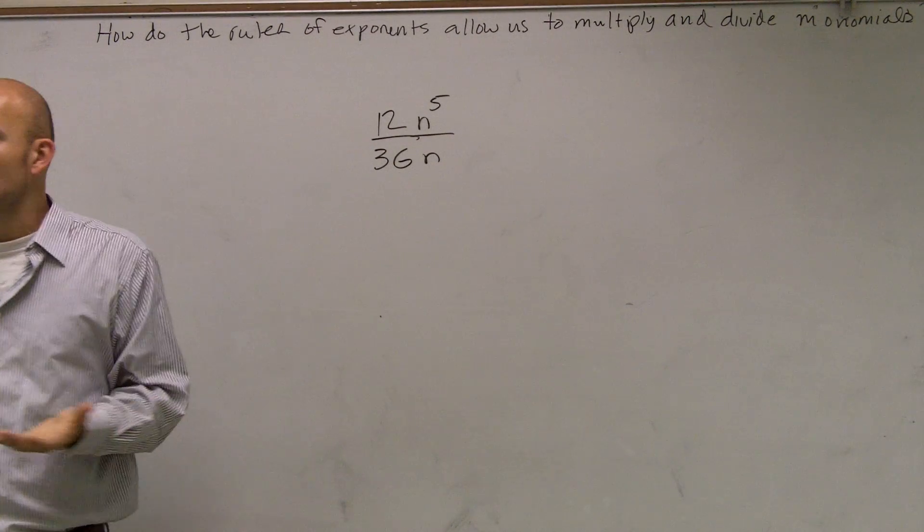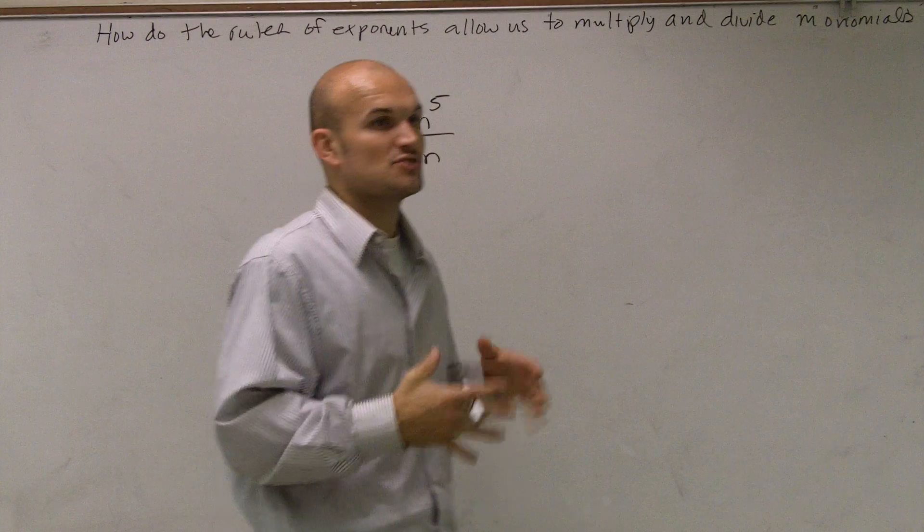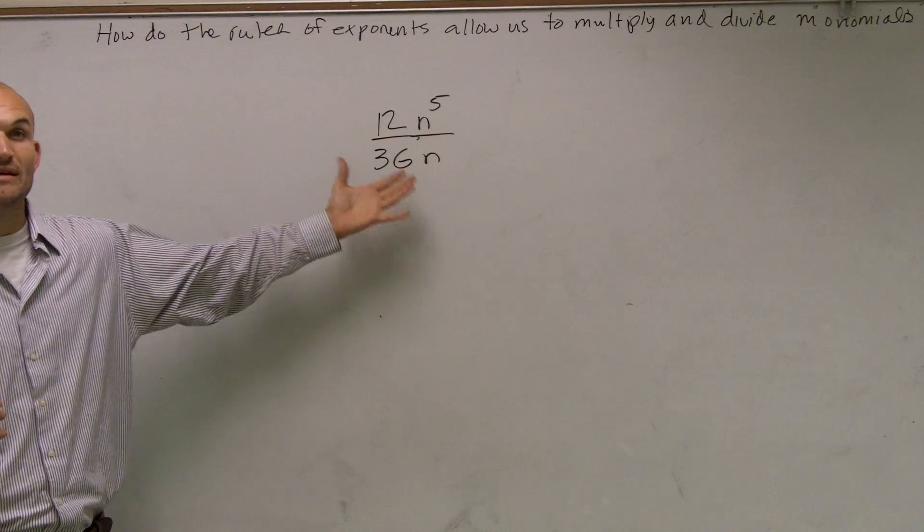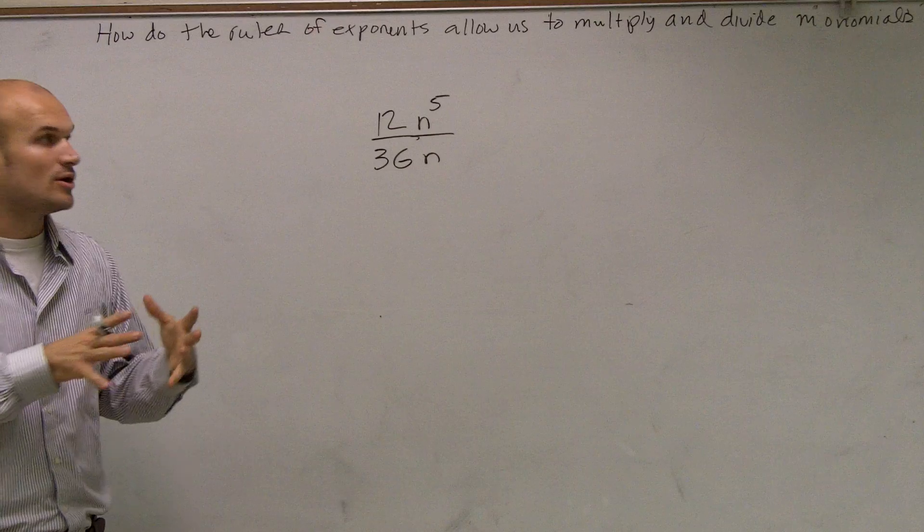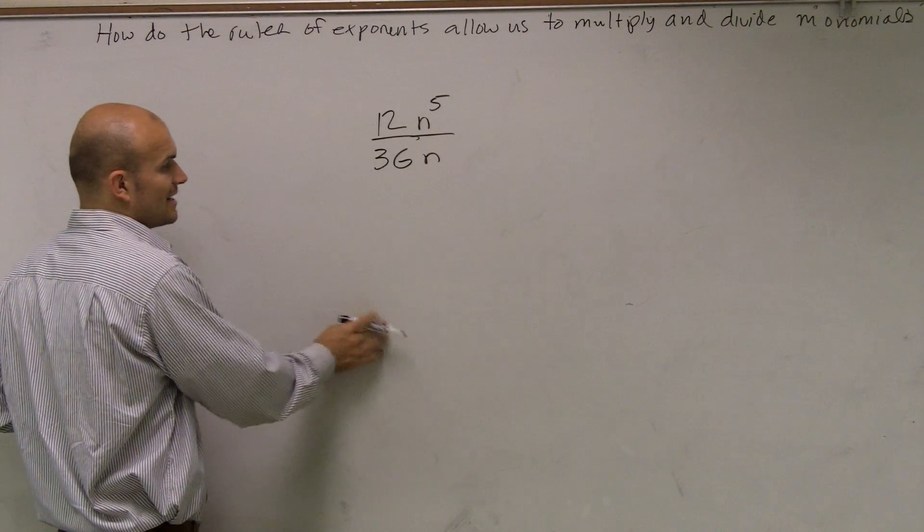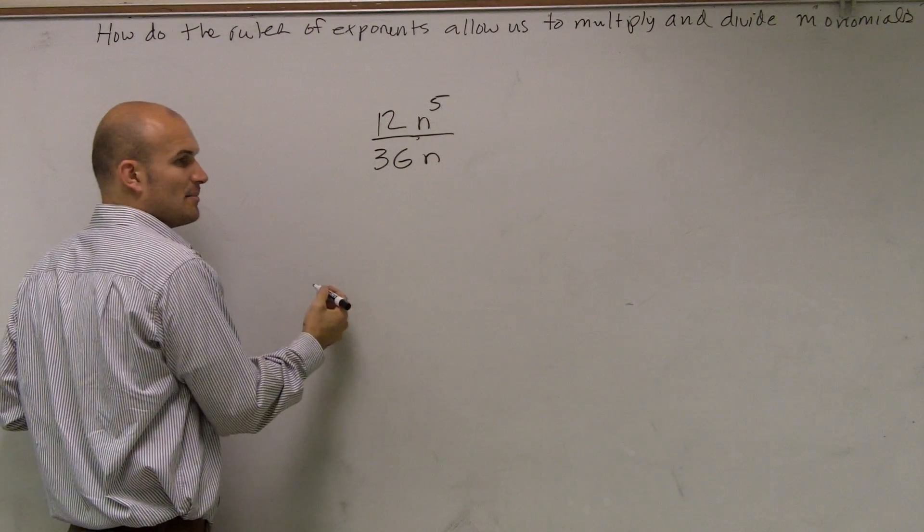To divide this, we can only use our rule of exponents when we have the same base with an exponent. We have some numbers, we have some variables with exponents. Remember, our rules of exponents only work when they have the same base. So I can only divide a number from a number.